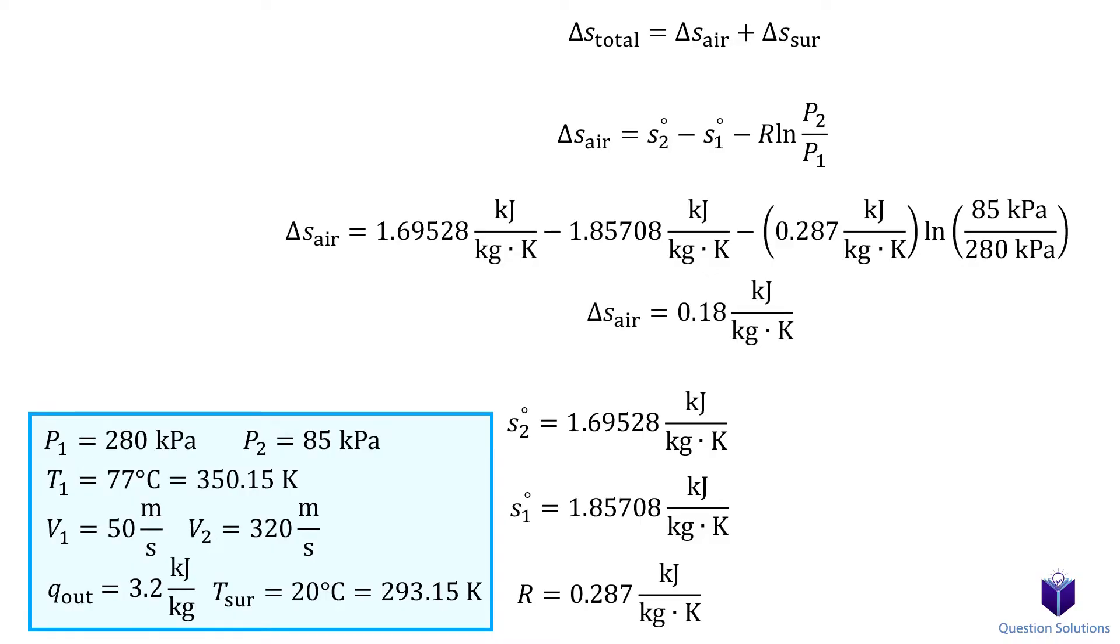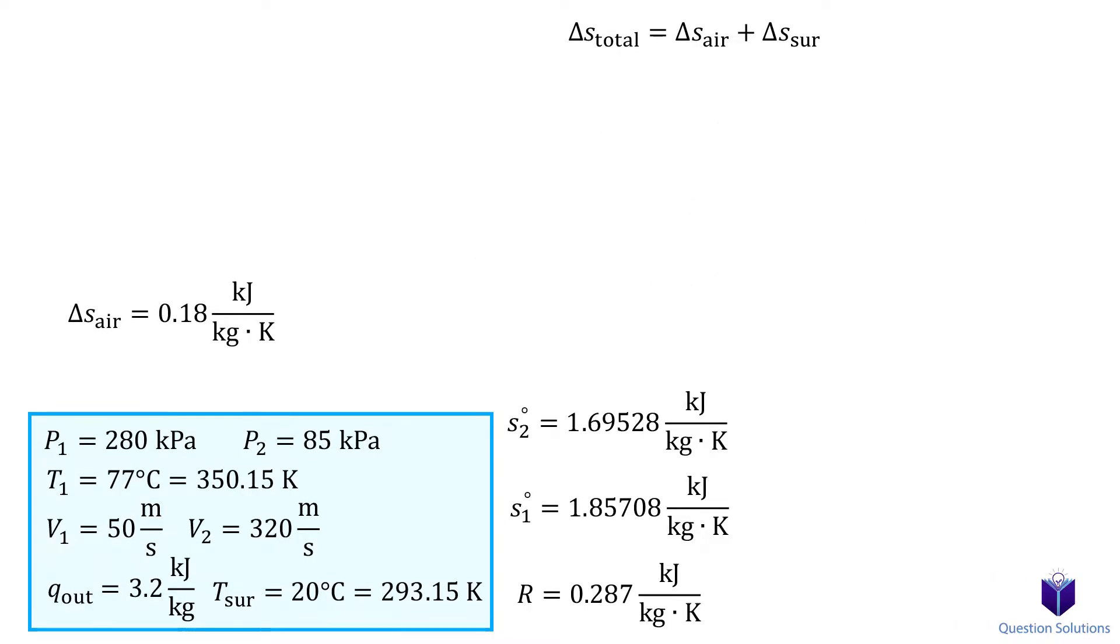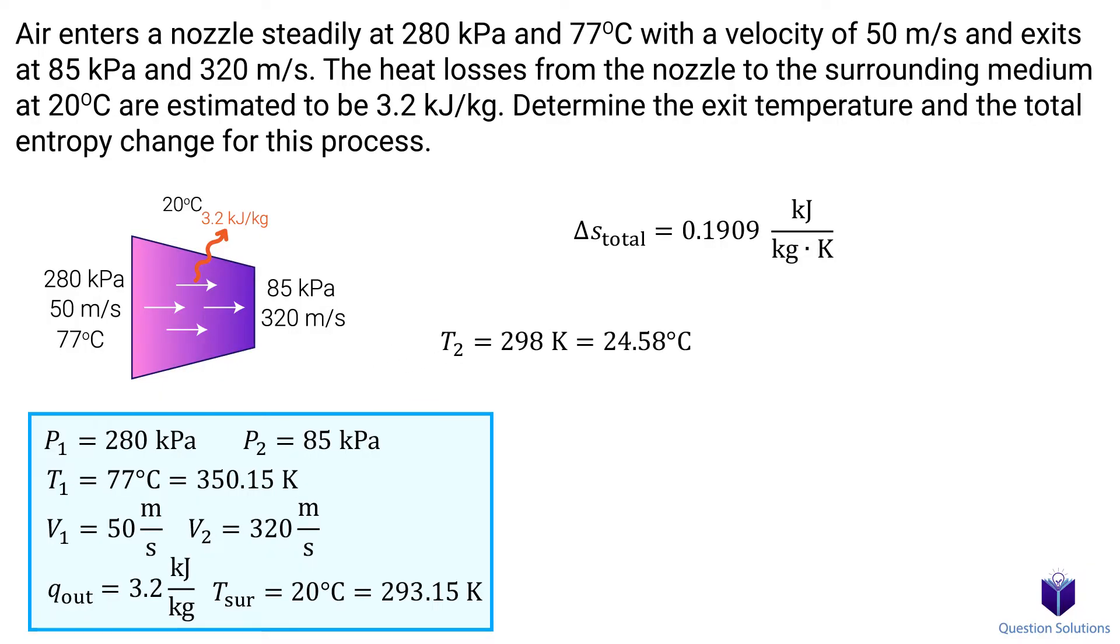Now we can focus on entropy change of the surroundings. For that we can use this equation. This should be familiar to you from the increase of entropy principle video. When solving for the entropy change, we are now considering the surroundings to be our system, where the temperature is pretty much isothermal. And we have some heat input. Let's plug our values in and solve. The total change is then the addition of these two values. And those are our answers.